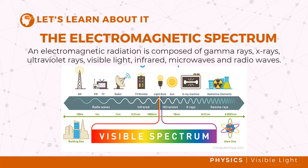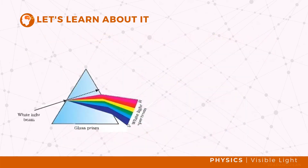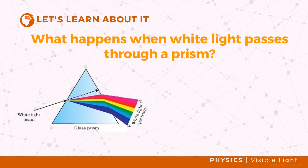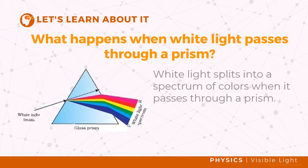The only part of the spectrum that is visible to human eyes is visible light, which lies between infrared and ultraviolet rays. The color of light is an indication of its energy level. Most of you are familiar with a triangular piece of thick glass called a prism. When white light passes through a prism, a continuous spectrum of colors is produced — this is called the dispersion of light.